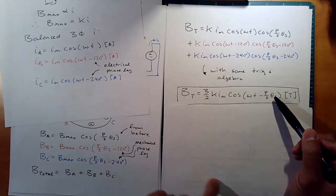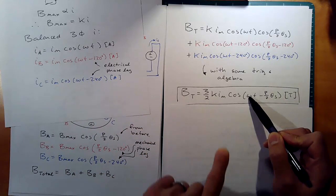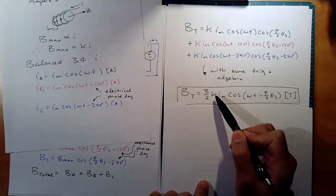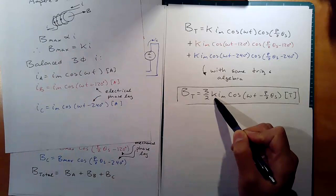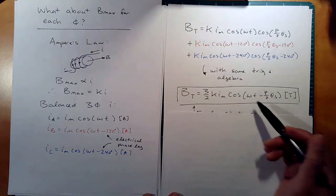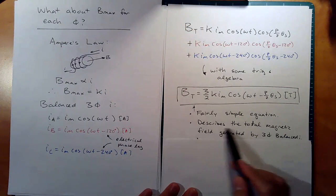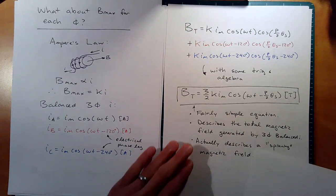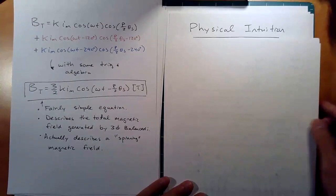To review the final equation: theta s is the position around the stator, p is the number of poles per phase, omega comes directly from the electrical frequency, I_m is the amplitude of the current, K is the Ampere's law coefficient representing how much amplification you get from I to B — number of turns, permeability, etc. — and the factor of 3/2 is a consequence of the trig. This equation describes a total magnetic field generated by balanced three-phase current, and it actually describes a spinning magnetic field, which is neat.